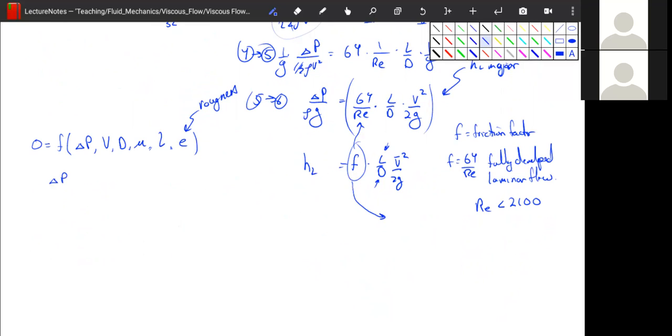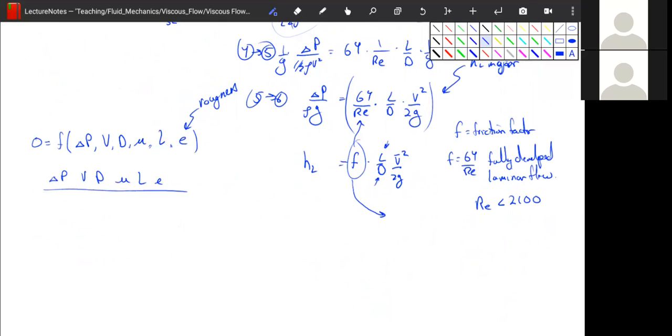We have delta P, V, D, mu, L, and E. Delta P is going to be mass divided by length times time squared. This is length per time. This is a length. This is a mass per length time. And we have our length is obviously a length. And our roughness is a length.